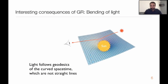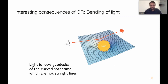Einstein's theory, apart from explaining some observational puzzles, made some very interesting predictions. One is that since light travels through straight lines because the shortest distance between two points in flat space is a straight line, if space-time is curved, light follows the so-called geodesics of that curved space-time. Geodesics are the shortest paths connecting two points in a general space-time, which are not straight lines.